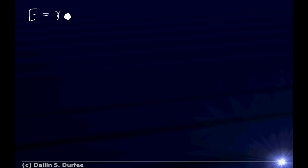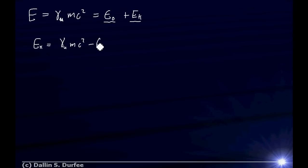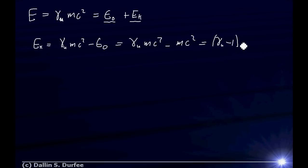How much energy does the proton have when it's moving at half the speed of light? The total energy of a particle is γ_u mc². That subscript u reminds us that this gamma has to do with the velocity of the particle, not the velocity of some reference frame we're transforming into. The total energy is made up of the rest energy plus the kinetic energy. I don't have to give it the rest energy because it already has that when it's at rest — I just need to give it the extra energy to accelerate it. So the kinetic energy is (γ_u − 1) mc².